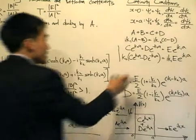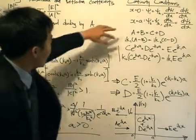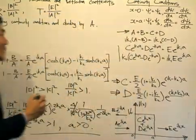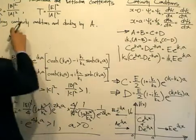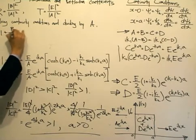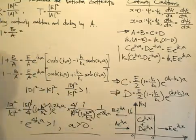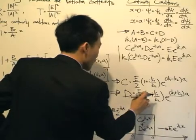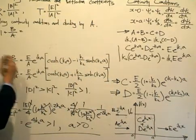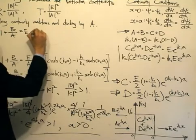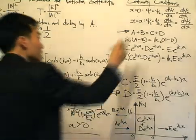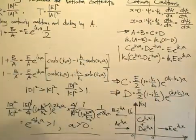Now that C and D are written in terms of E, substitute them back into the first two equations and divide by A. For the first equation, A/A gives 1 and we retain B/A. The common factor between the two terms is E/2 times e^(ik1a). To add these two terms together, we separate and add real parts first, then imaginary parts — real parts give e^(−k2a) and e^(k2a), and the imaginary parts involve ik1/k2.